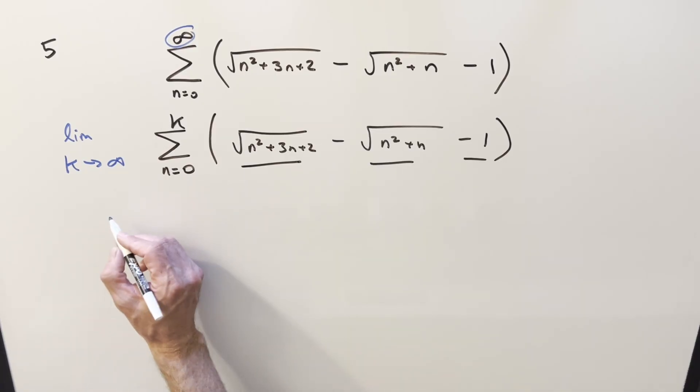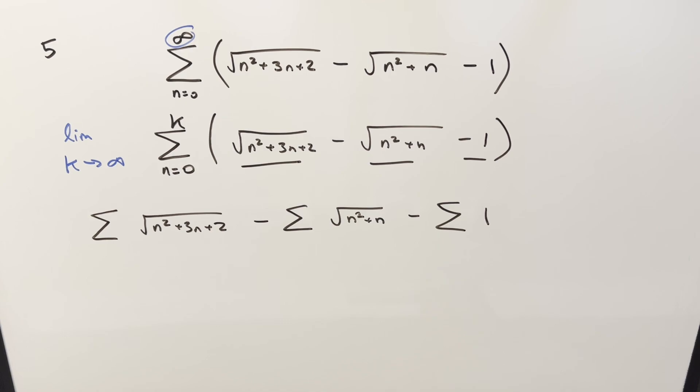So we're just going to have three different sums written out. And now what we can do here is just some factoring. We can clearly factor this one and this one. This one's really simple. This is the same thing as n times n plus one.